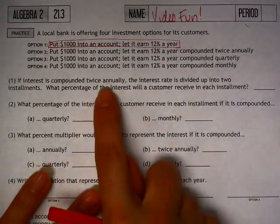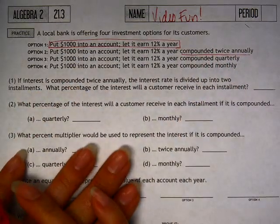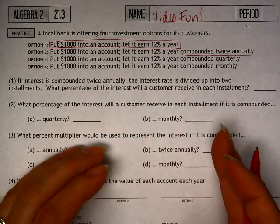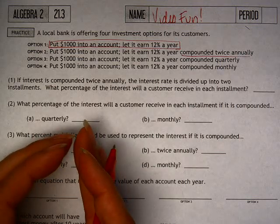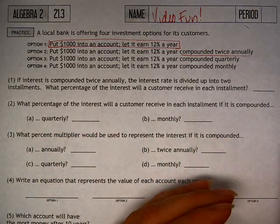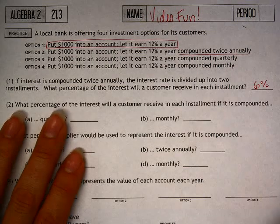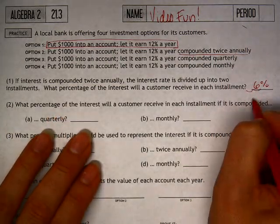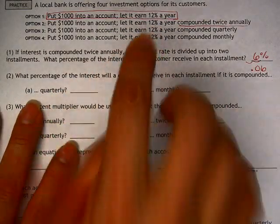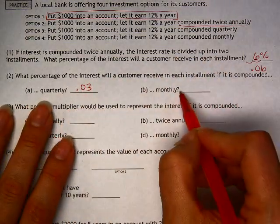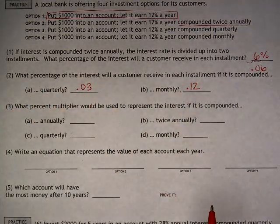What happens is that banks compound interest differently. Say it was compounded twice annually. That would mean they take the 12% you would normally get for the whole year and split it into two parts. So they would do 6% for the first half and 6% for the second half. If it was quarterly, I would divide by 4. If monthly, I would divide it by 12. These would be the percentages you would get a little bit at a time.